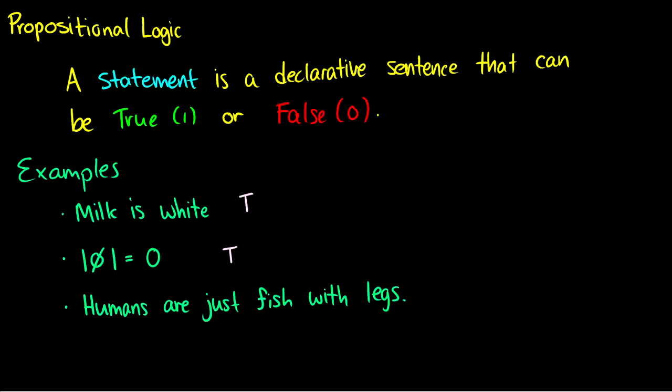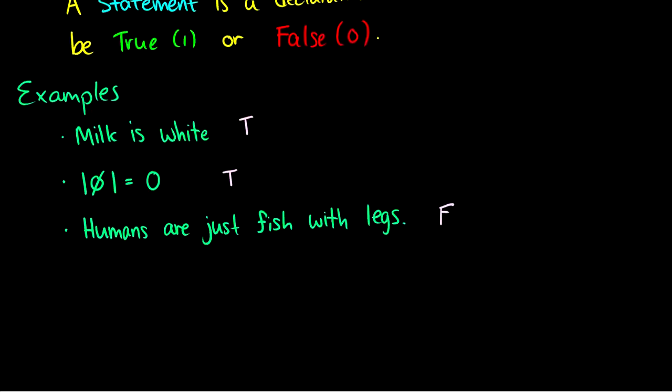Finally, humans are just fish with legs. Well, that's not true. We are not fish with legs, we're much more than that. So that's false. But the point isn't whether or not these statements are true or false, but rather that they are statements, which means that in propositional logic we can express them.